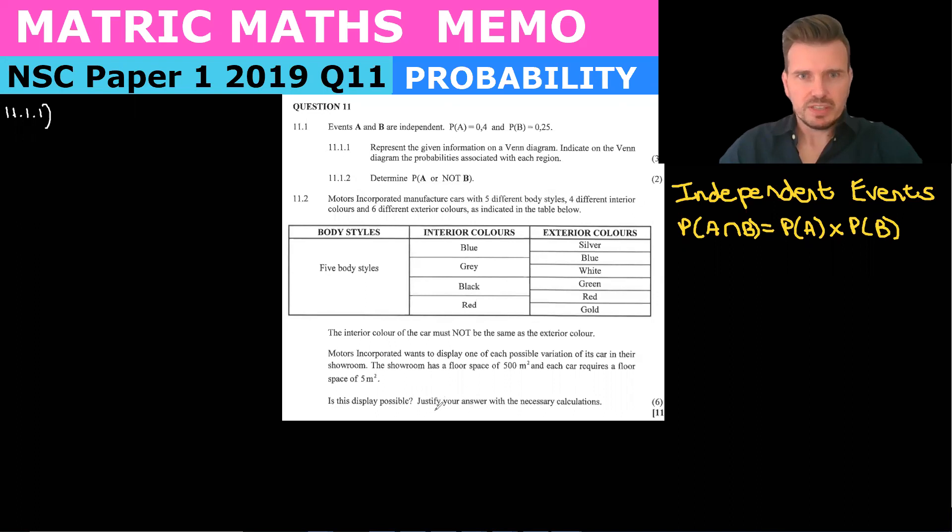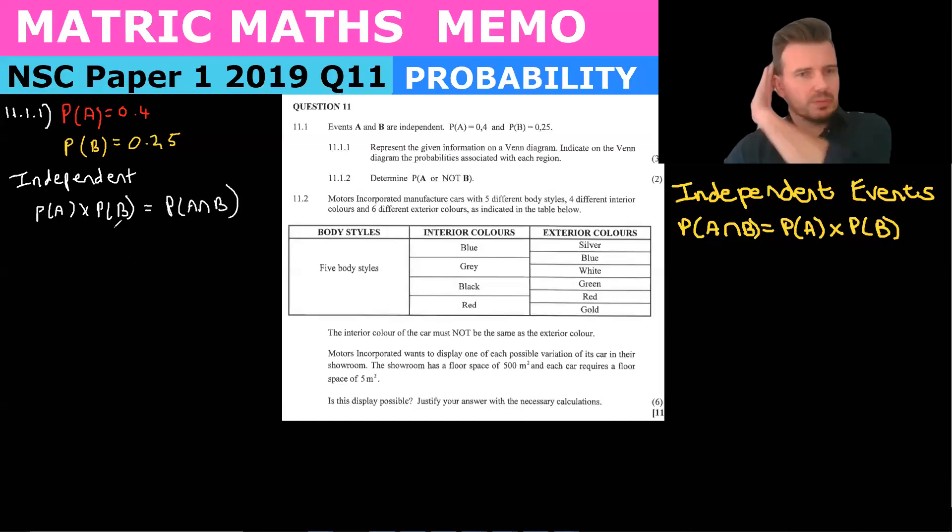We've got events A and B that are independent. Probability of A is equal to 0.4 and the probability of B is equal to 0.35, and they are independent. So independent events means that when you multiply probability of A times probability of B, you get probability of A and B. Here we go on the right hand side we've got that formula for independent events. It's not in the formula sheet so it's something that you have to remember.